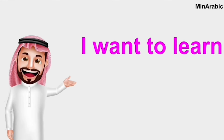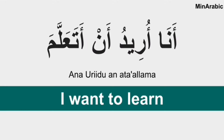Now how to say 'I want to learn'? We've seen all these words separately. Now we combine them. In Arabic: ana ureidu an ata'allam. Ana means I, ureidu means want, an means to, and ata'allam means learn. Ana ureidu an ata'allam — I want to learn. Good.